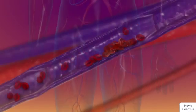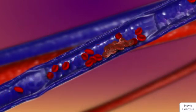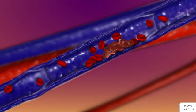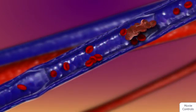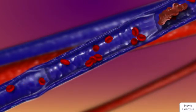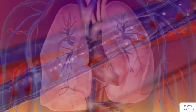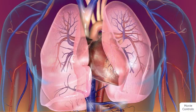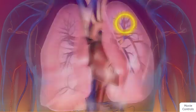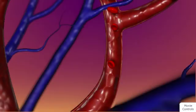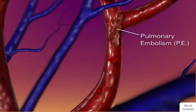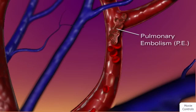A clot that forms in the large, deep veins is more likely to break free and travel through the vein. It is then called an embolus. When an embolus travels from the legs or pelvic areas and lodges in a lung artery, the condition is known as a pulmonary embolism or PE, a potentially fatal condition if not immediately diagnosed and treated.